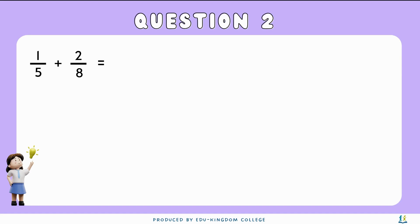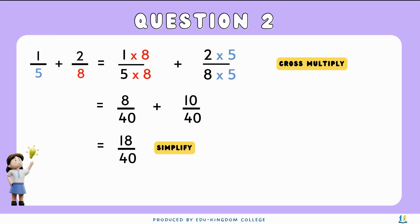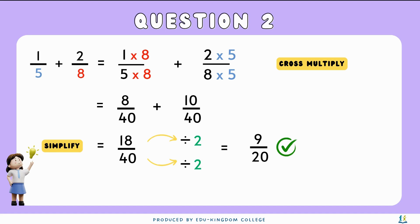Question two — please pause the video and try this question by yourself first. One over five plus two over eight. First we cross-multiply: one times eight over five times eight, plus two times five over eight times five, which gives us eight over forty plus ten over forty, which equals eighteen over forty. Simplifying by dividing by two gives us nine over twenty, which is the final answer.